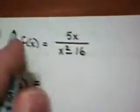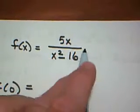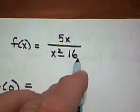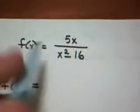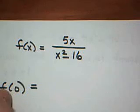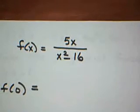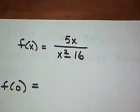This is question 8. The function f of x equals 5x divided by x squared minus 16. The reason this is called a rational function, the numerator is a polynomial and the denominator is a polynomial. So this is the ratio of two polynomials, thus the term rational function.